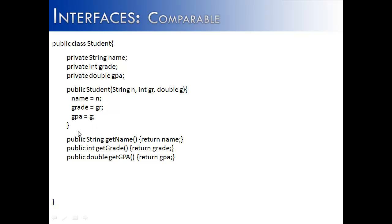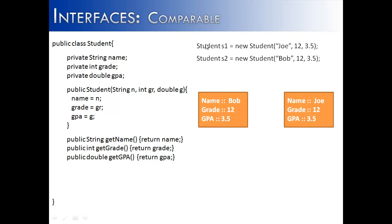At the bottom, I have created three accessor methods that allow you to getName, getGrade, and getGPA. I've created two objects called S1 and S2. The first one is called Joe, grade level 12, GPA 3.5. And then we have Bob, who is also in grade level 12 with a GPA of 3.5.